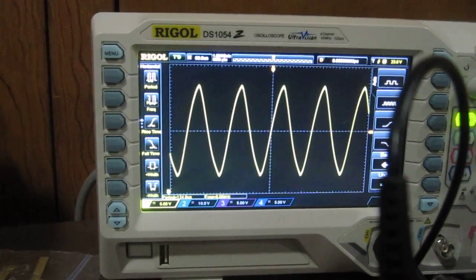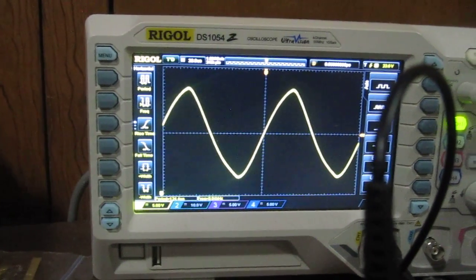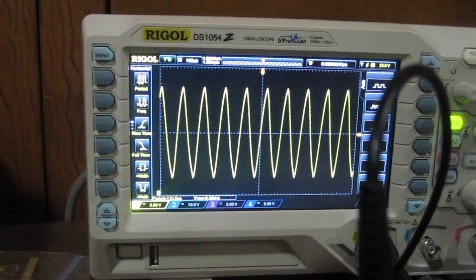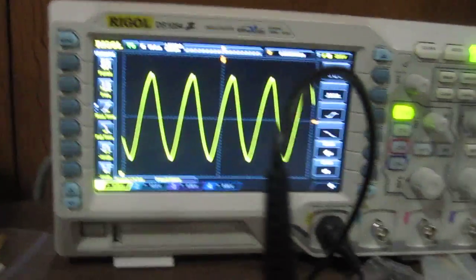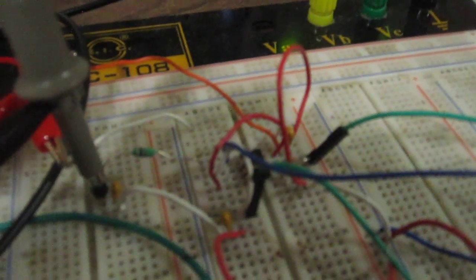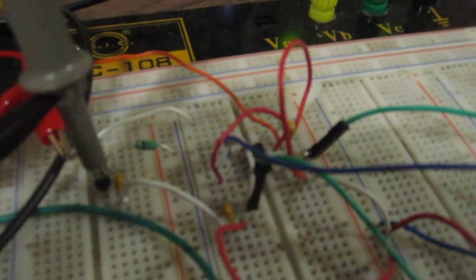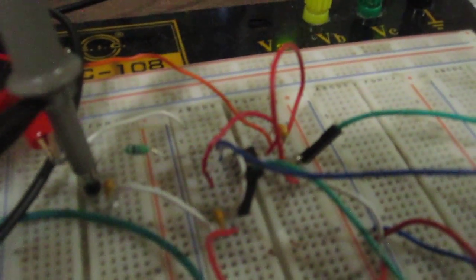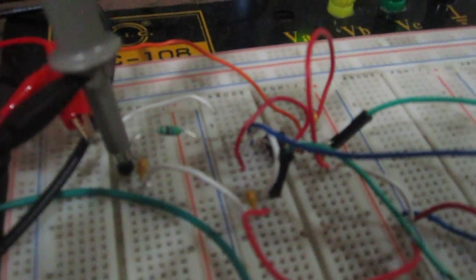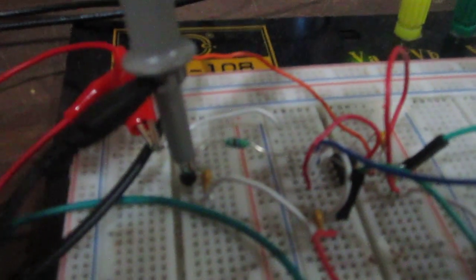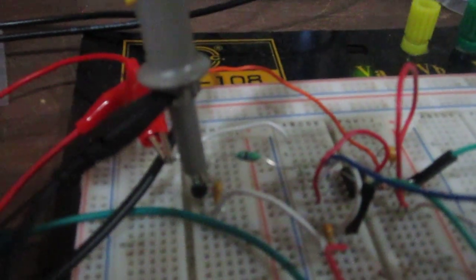You can see that the signal looks very much like a sine wave. And how this circuit works is I use the 555 timer chip and put it in astable mode to produce a square wave signal. And then I use an LC network to convert that square wave into a sine wave.